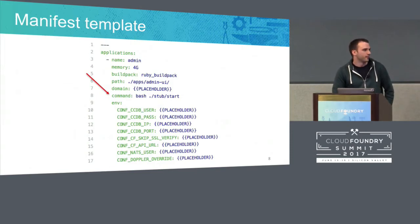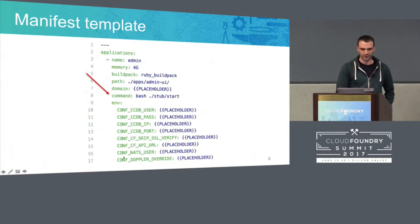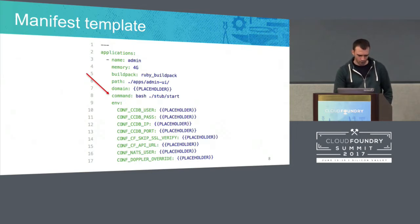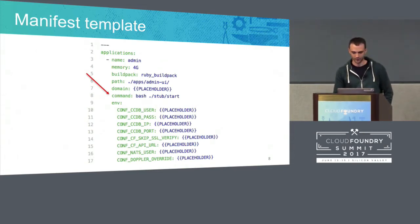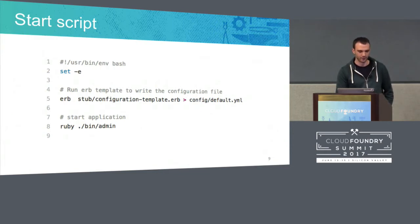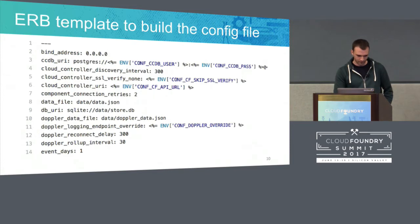This is the template of the manifest we use to deploy the application on Cloud Foundry. We pass all the configuration we would like to set as environment variables, and then we launch the application with a different command. Instead of starting the Ruby process directly, we launch a Bash script. This allows us to read the configuration from the environment and write it to a file. It's a really simple Bash script that uses ERB to evaluate a template and write the configuration file inside the container after the application is pushed, and then we start the application. This is an example of an ERB template — just the configuration file plus ERB code that reads from the environment and writes to the file.